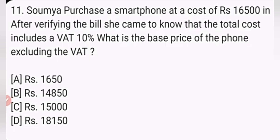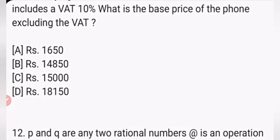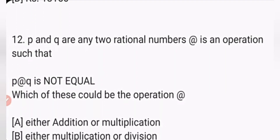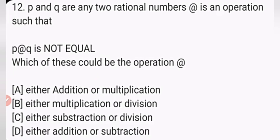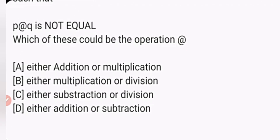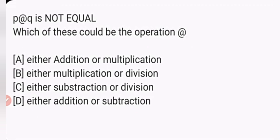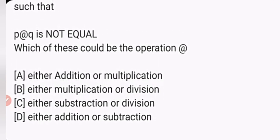Question 4: P and Q are two rational numbers. An operation ⊛ is such that P ⊛ Q is not equal to Q ⊛ P. Which of the following could be that operation? Options are: addition or multiplication, multiplication or division, subtraction or division, or addition or subtraction. The answer is option D — either addition or subtraction. Thanks for watching; like, share, and subscribe.